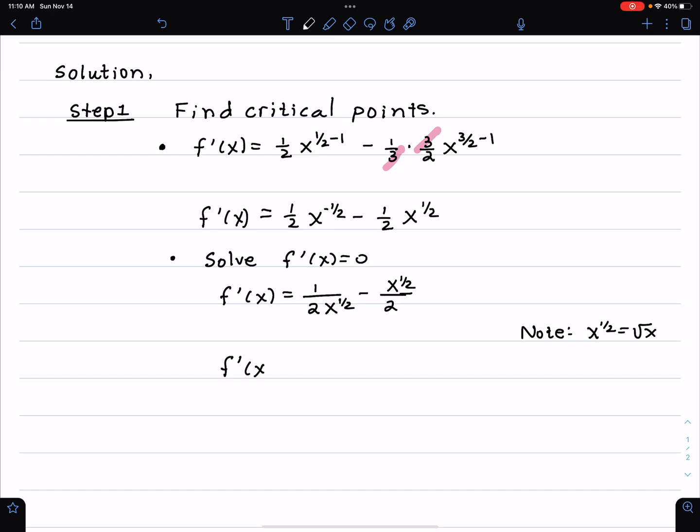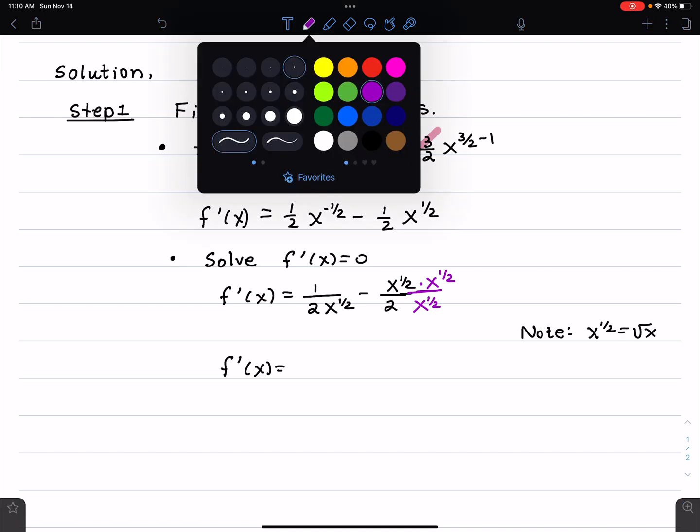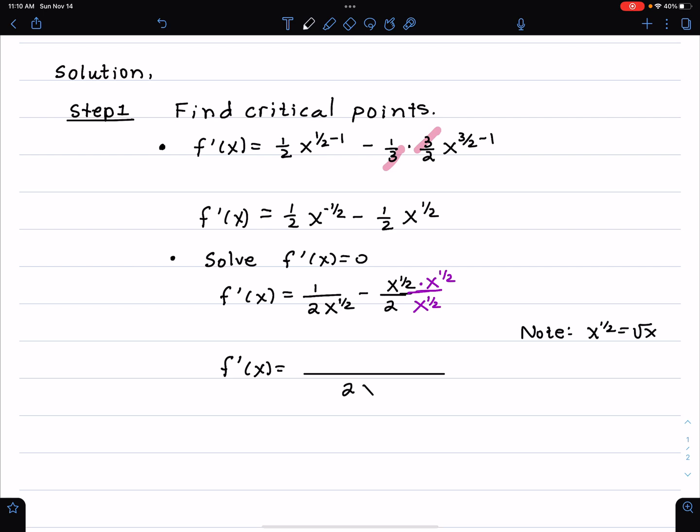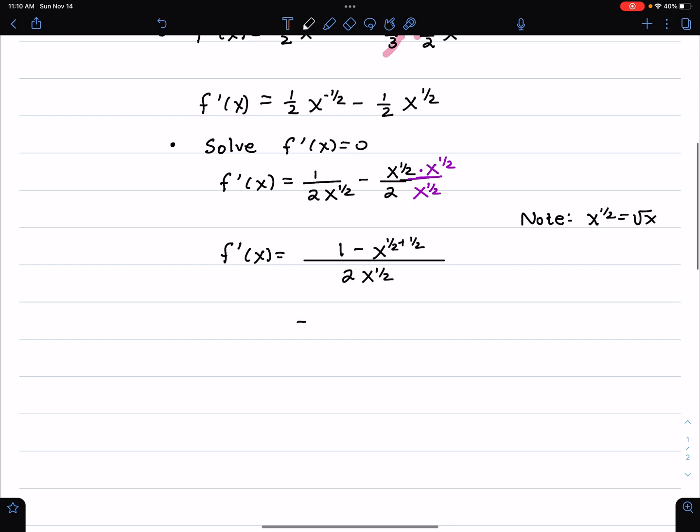I'm going to multiply the denominator of that second fraction by 1/2, and therefore multiply the numerator by 1/2. That gives me, on the denominator of our fraction now, 2x to the 1/2. For the numerator, I add the exponents: 1/2 plus 1/2. So that gives 1 minus x over 2x to the 1/2. Lots of algebra. Calculus, beginning calculus involves a lot of algebra.